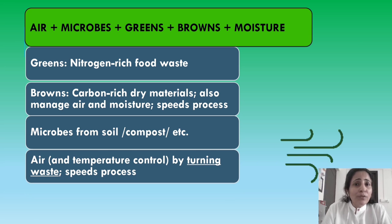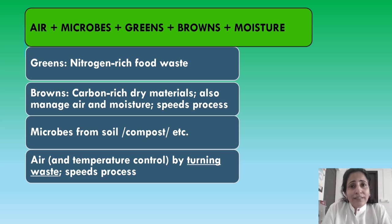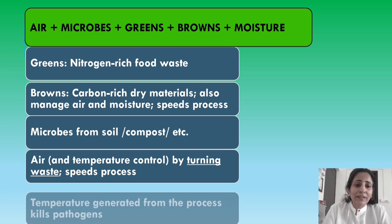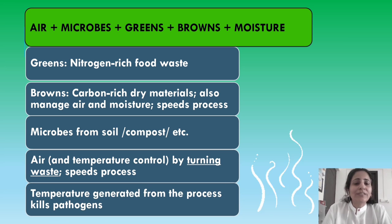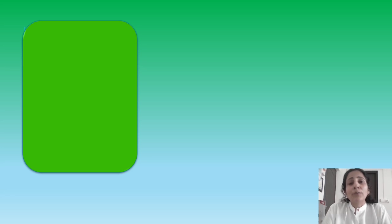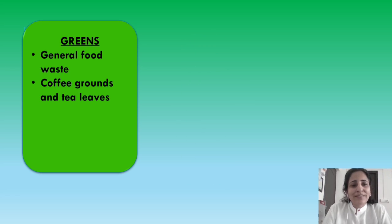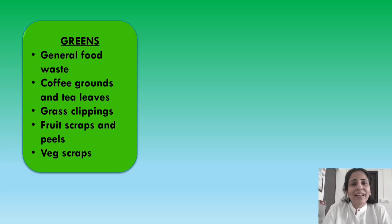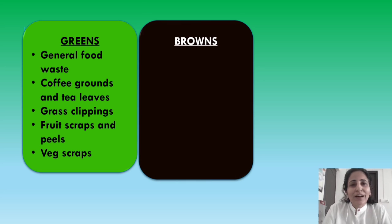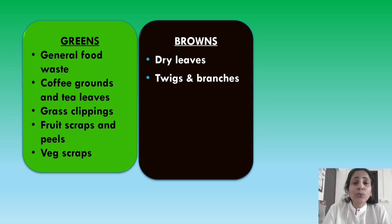Air is required for the process — it is induced into the system by turning, which can be manual or mechanical. This process generates heat which kills the pathogens in the final compost product. Now, what are the greens? They include general food waste, coffee grounds, tea leaves, grass clippings, fruit scraps and peels, and vegetable scraps.